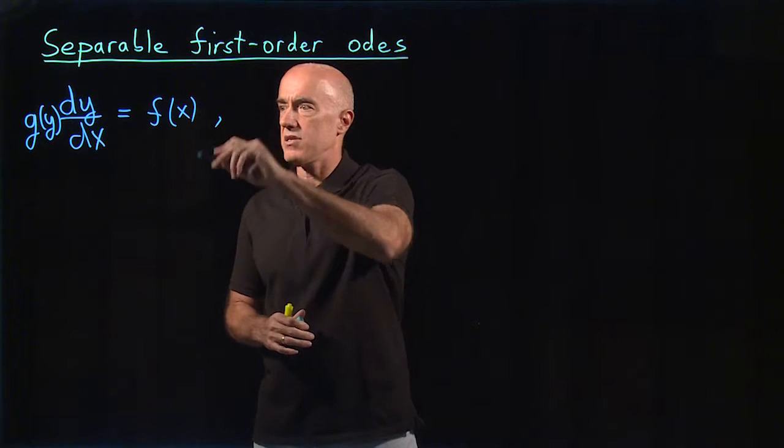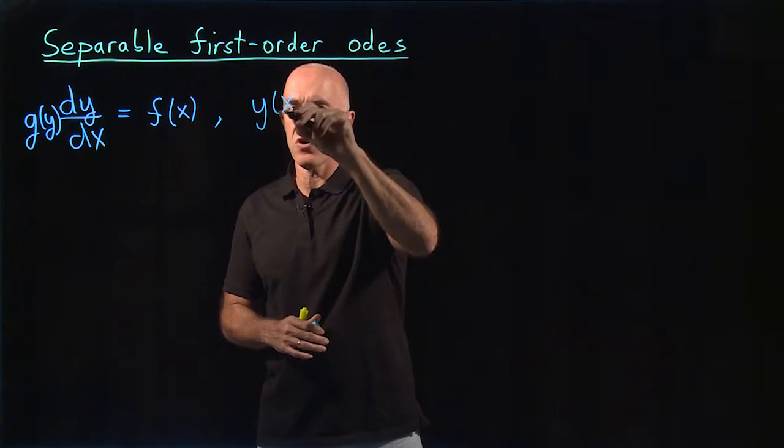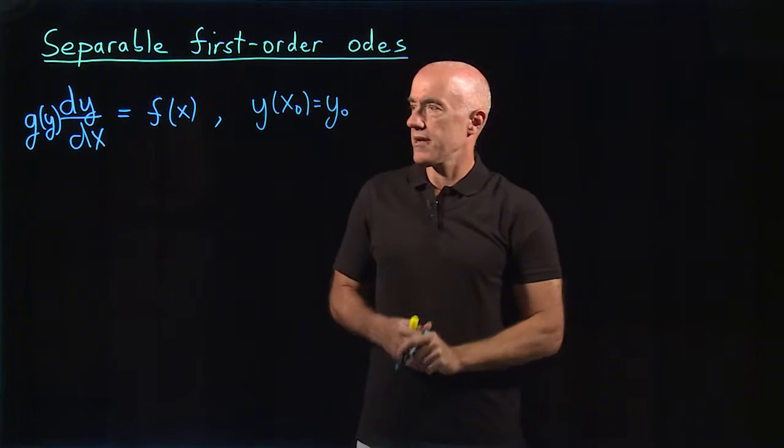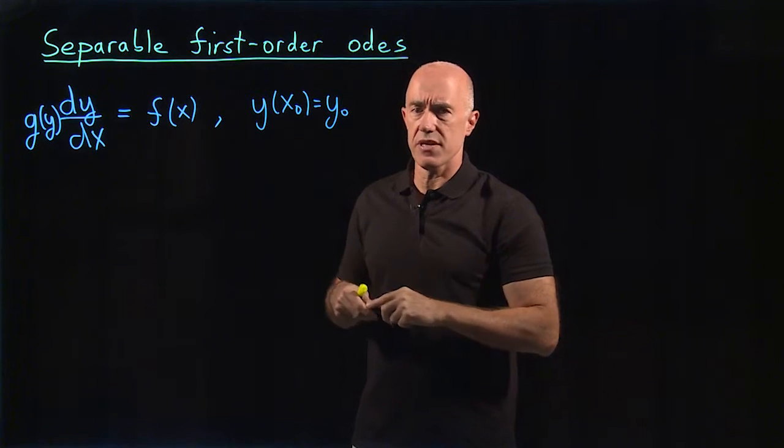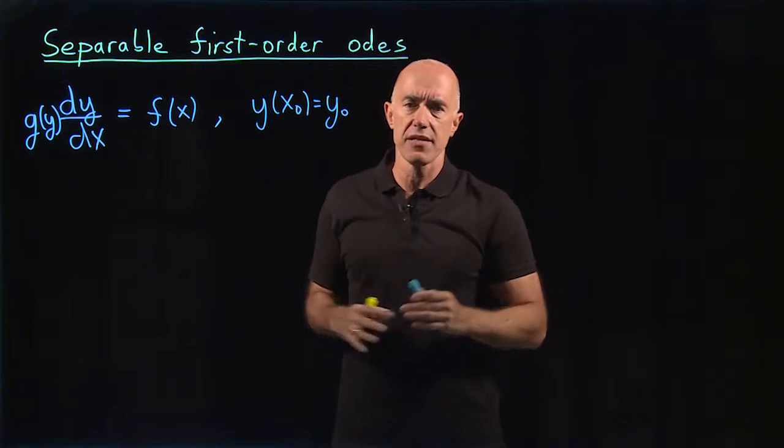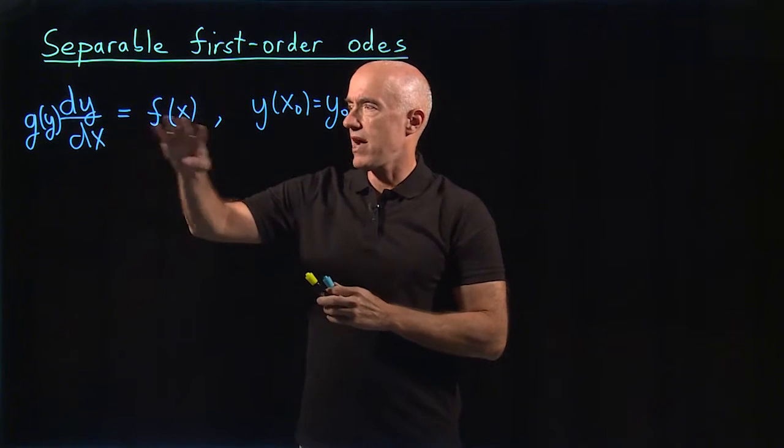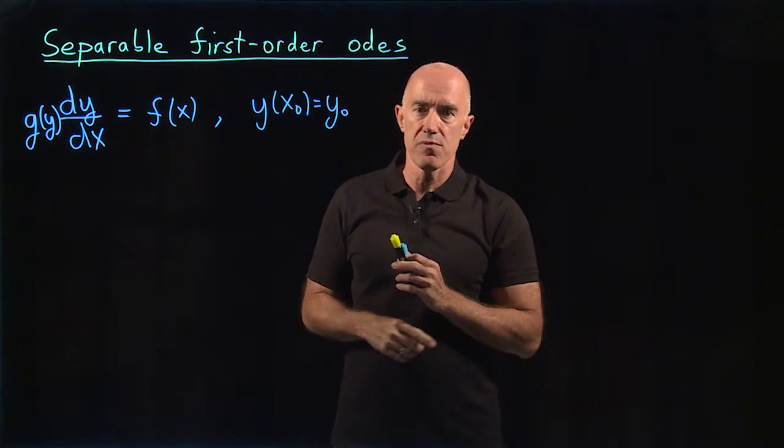Together with this we need an initial condition. So let's say y of x naught equals y naught. So if a first-order equation is of this form where the right-hand side splits into a function of x times a function of y, and we can write it like this, then we say that the equation is separable.